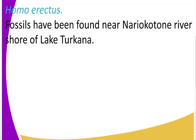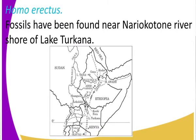Where were the fossils of Homo erectus first found? The fossils were found at Nairikotone River, which is at the shores of Lake Turkana. Using our map, you can clearly see where River Nairikotone is. At the top part you have Ethiopia, then you have Kenya. There is a river joining Lake Turkana — that's the river we call Nairikotone River. That is where we first get the fossils of Homo erectus.